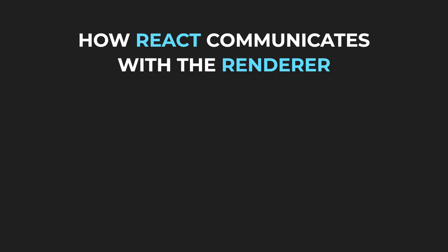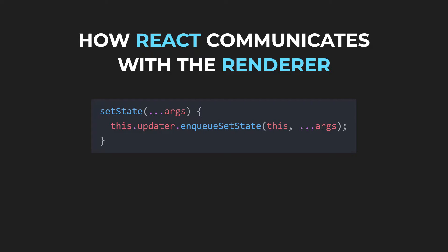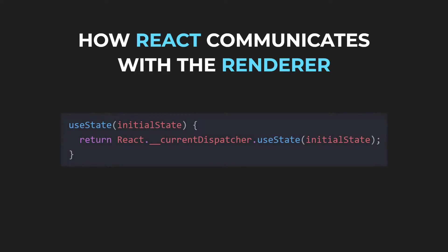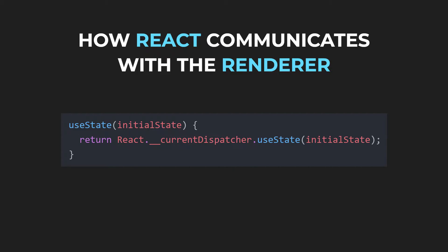I have already covered this in previous videos, but just to quickly recap: setState calls are forwarded to the renderer, in our case React DOM, using a field called updater. React DOM always sets this field before an update happens whenever an instance of a component is created. In terms of React hooks, the field is instead called dispatcher, but the principle is the same.